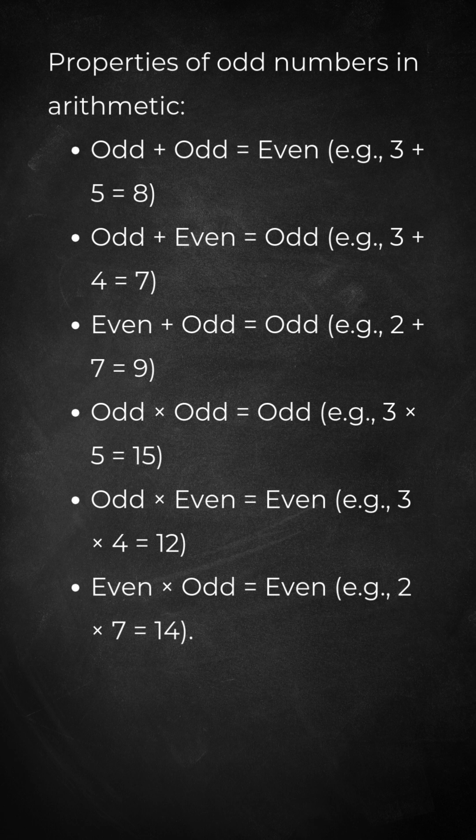Odd times odd equals odd, example: 3 times 5 equals 15. Odd times even equals even, example: 3 times 4 equals 12. Even times odd equals even, example: 2 times 7 equals 14.